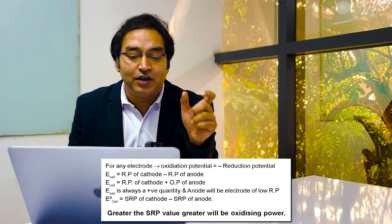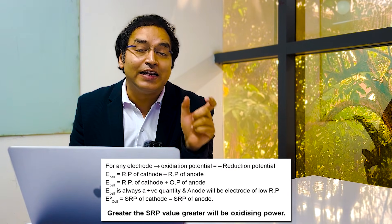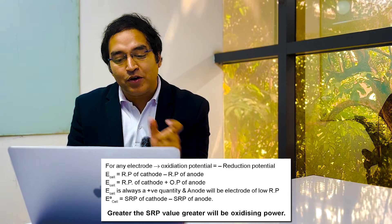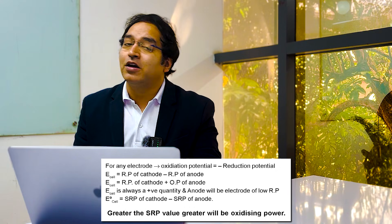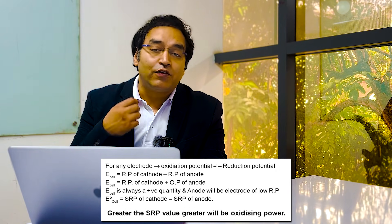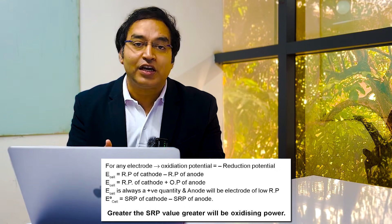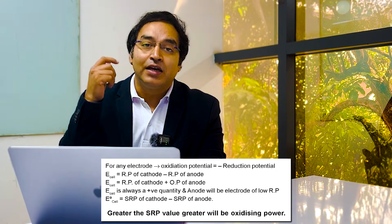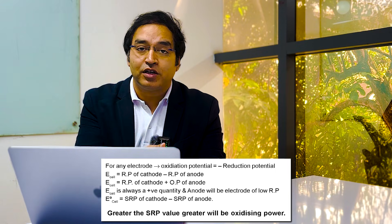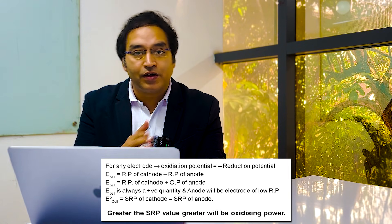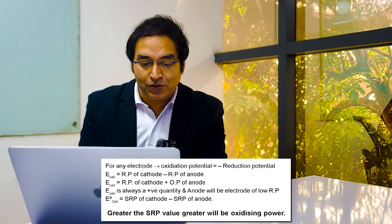Let's start with the first thing: E-cell. E-cell is defined as RP of cathode minus RP of anode, as you can see on the screen. Similarly, you can define E°-cell as SRP of cathode minus SRP of anode. Another option is if you write oxidation potential and reduction potential respectively, you can add them directly with a plus sign.